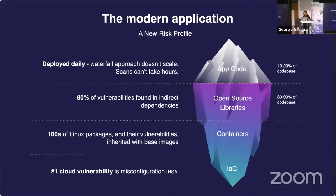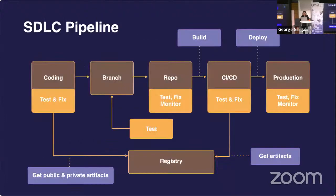Now we have a better understanding of what a modern application is and its new risk profile. The application code is only around 10–20% — the proprietary code you write. But then you bring in open source libraries, containers, and IaC as well. It is therefore important to have guardrails at each stage of your pipeline to spot vulnerabilities, since your attack surface is bigger. These guardrails can be placed at the coding stage, the branch and repo level, or within your CI/CD pipeline using Jenkins, GitHub Actions, Azure Pipelines, or GitLab Pipelines.